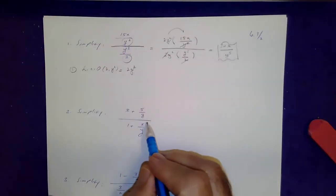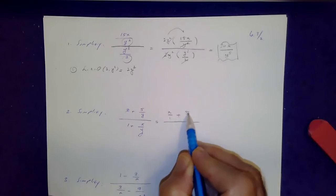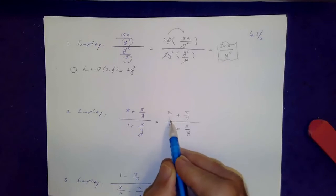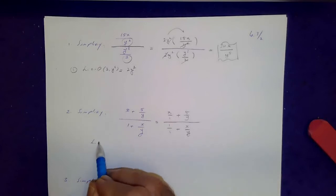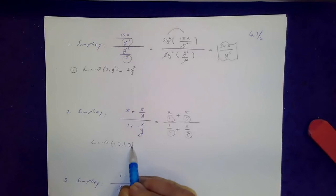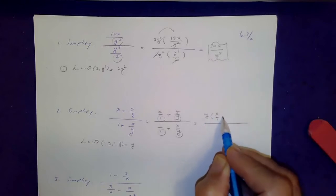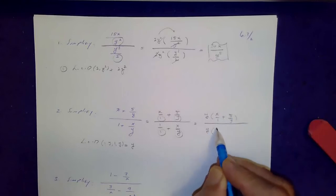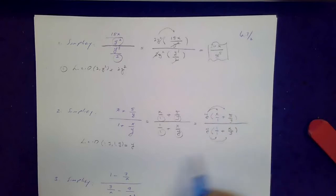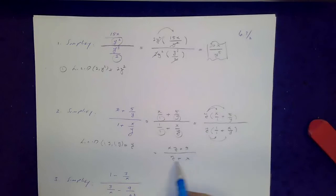The next problem is x plus 5 over y, divided by 1 plus x over y. The first step: change the whole numbers into fractions by giving a denominator of 1 to them. The next step is find the lowest common denominator of all these denominators — 1, y, 1, y — which happens to be y. Then multiply top and bottom of the main fraction line by y. Remove the parentheses. When you do, you get xy plus 5 on top, and the y's cancel to give y plus x on the bottom. Final answer.